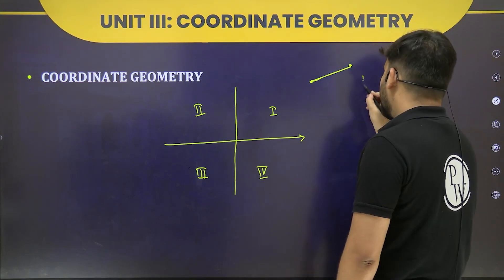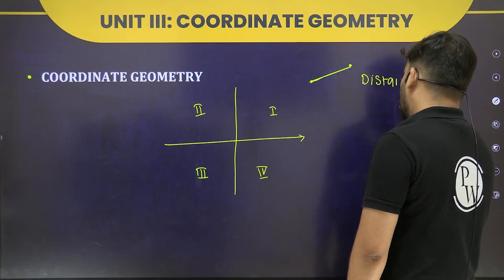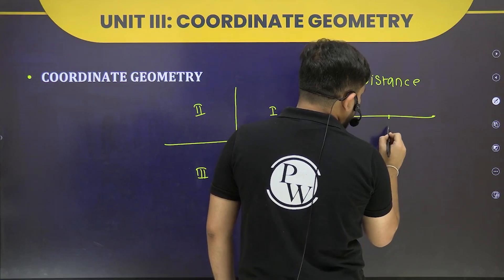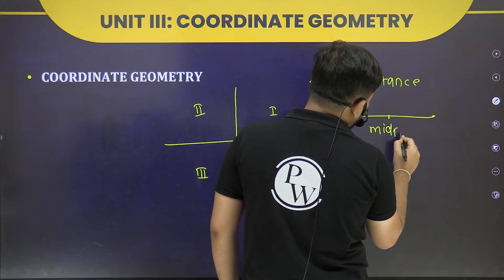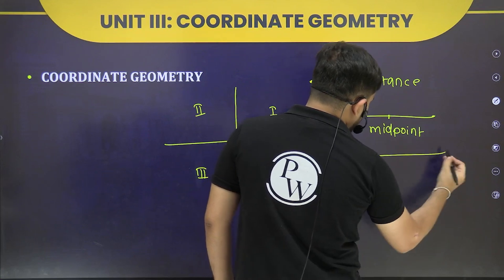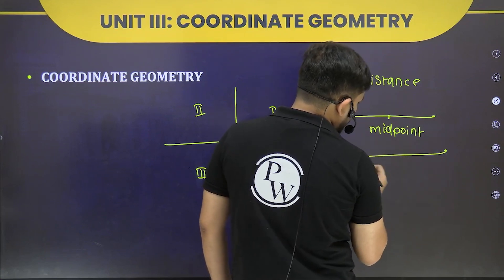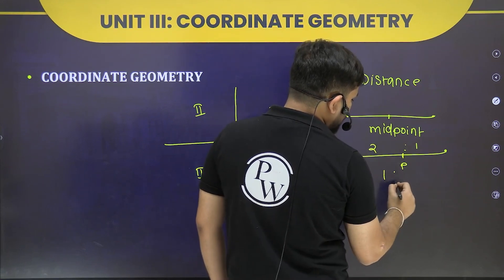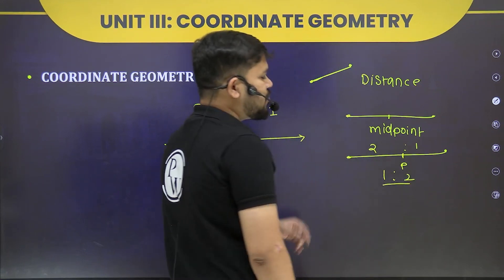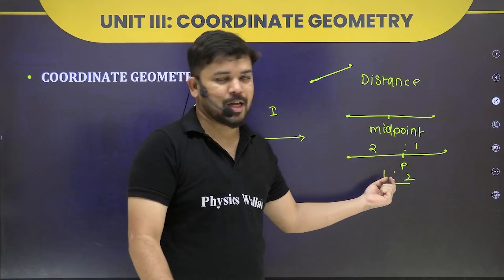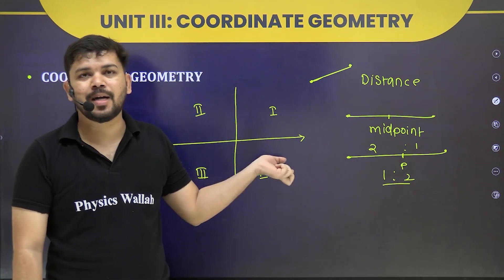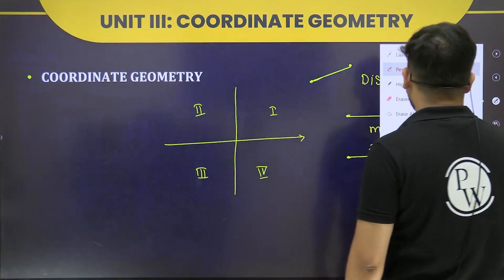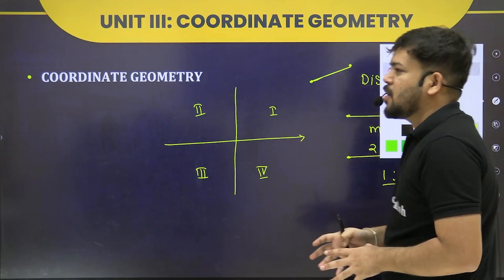In coordinate geometry, we will also see the midpoint formula — how to calculate the midpoint when two coordinates are given. Then the section formula — when two points and a third point dividing them in a given ratio like 2:1 are given, how to find the coordinates of that point. We will also cover what abscissa and ordinate mean.